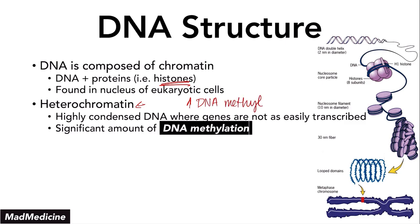Heterochromatin has a significant amount of DNA methylation — really high DNA methylation. Why is this important? Because methylated DNA allows your DNA structure to be really tight. Those methyl groups allow for multiple binding, and when that binding occurs, it's very difficult for molecules to get inside the DNA to transcribe it. So high levels of methylation means low DNA transcription to RNA.